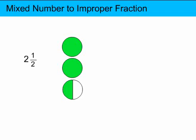So we divide the whole parts into halves, and then it's quite easy to determine how many fractional parts we have to represent it as an improper fraction, which is 5 halves.